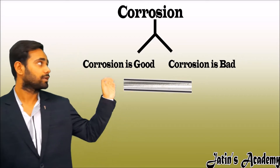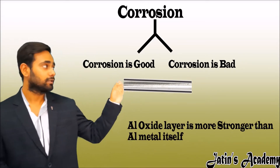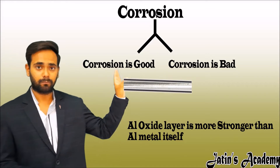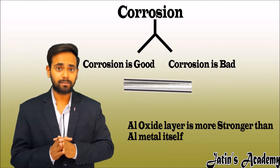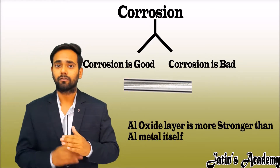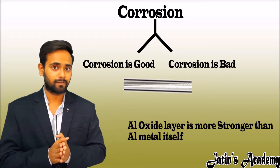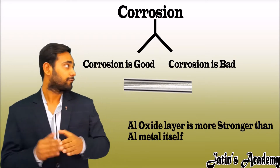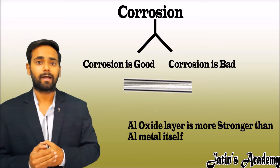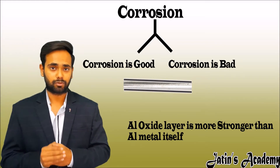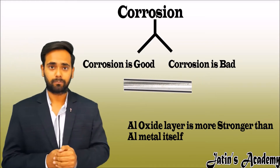Since the aluminium oxide layer is stronger, further oxidation of the aluminium metal does not take place, because there is already a strong layer of aluminium oxide present on the surface. So further oxidation does not take place, the metal remains strong and is not eaten up.